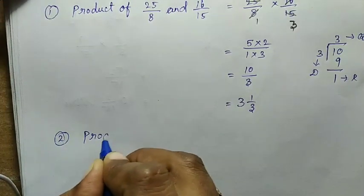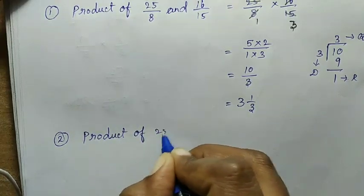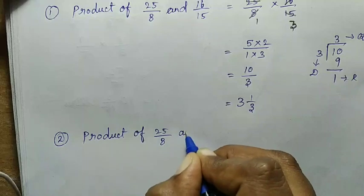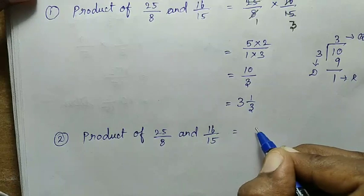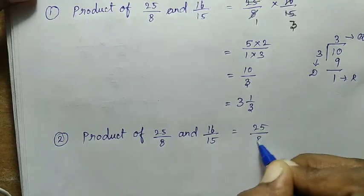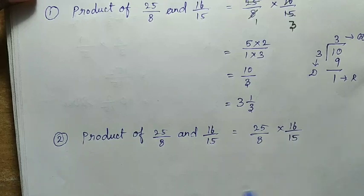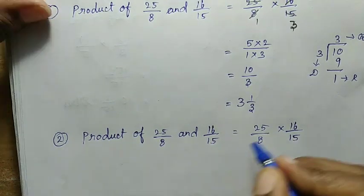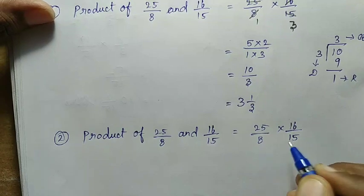Second method: product of 25 divided by 8 and 16 divided by 15. What do we do? 25 divided by 8 into 16 divided by 15. In this method, we can multiply numerator to numerator and denominator to denominator.